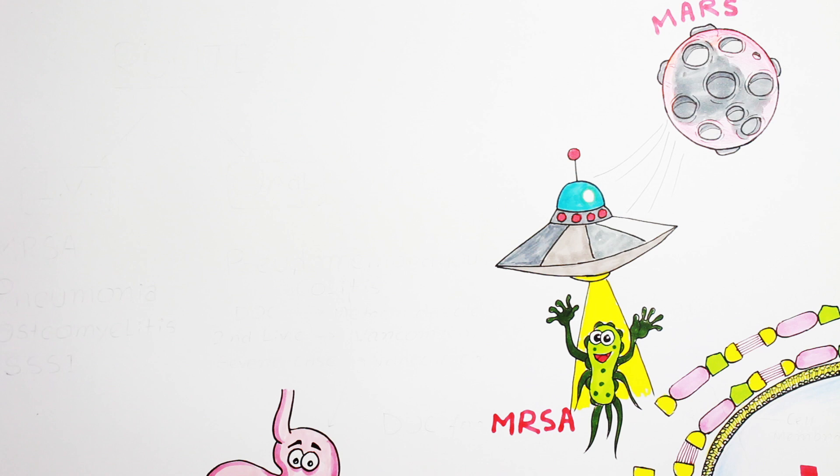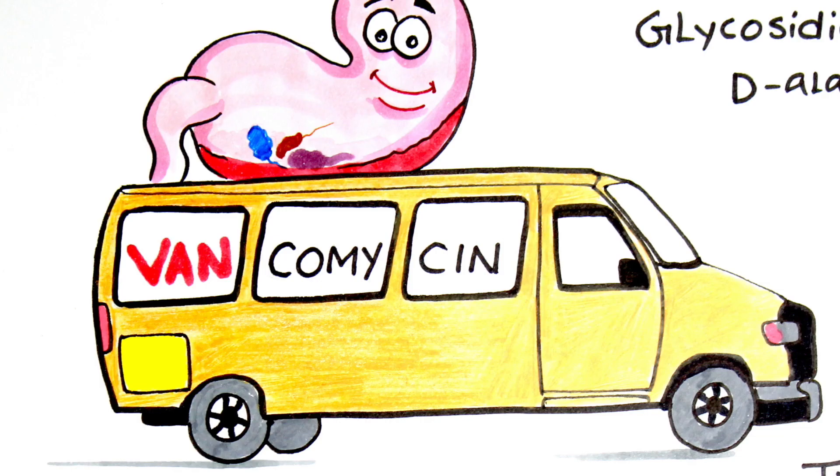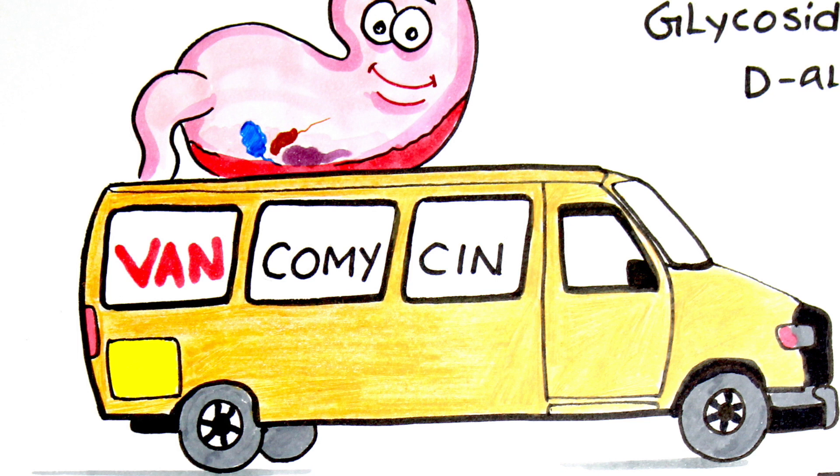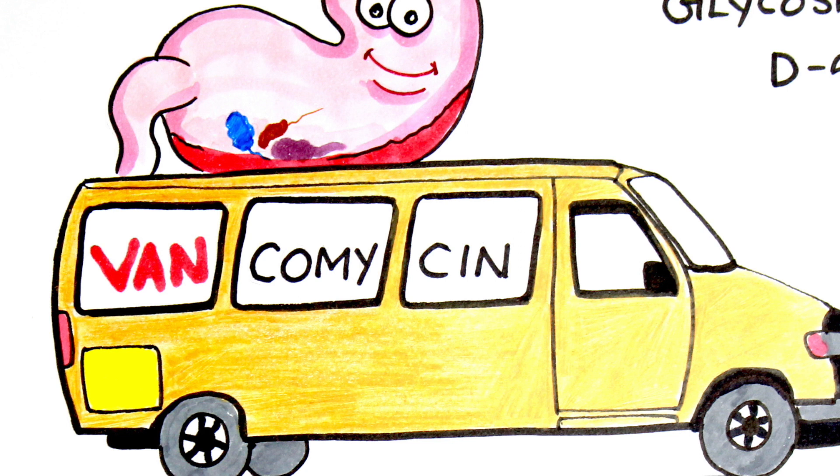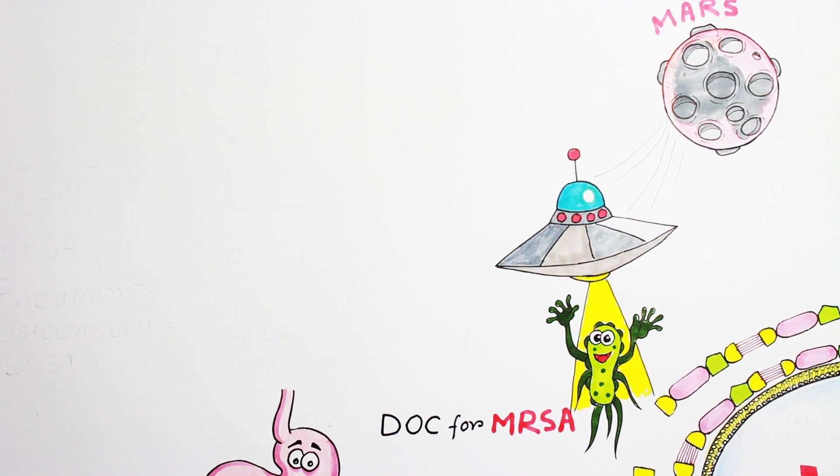The very first point is vancomycin is the drug of choice for MRSA or methicillin-resistant Staphylococcus aureus. Here I have drawn a van which will remind you of the drug vancomycin. So we have sent a van to destroy this naughty bacteria. The whole picture reminds you: a bacteria came from Mars named MRSA, and we sent a van-like drug called vancomycin to destroy this bacteria.